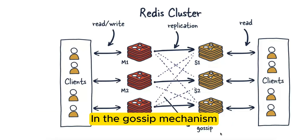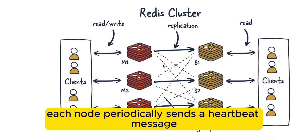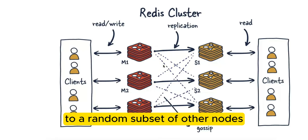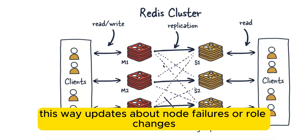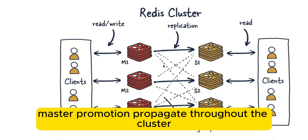In the gossip mechanism, each node periodically sends a heartbeat message to a random subset of other nodes to disseminate information about the cluster. This way, updates about node failures or role changes, for example master promotion, propagate throughout the cluster.